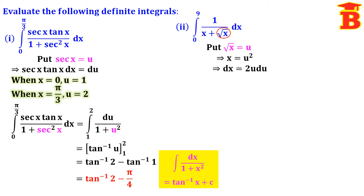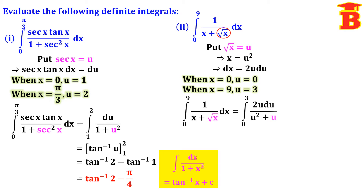We have to change the limit also. The given limit is from 0 to 9. If you put x equal to 0, root of 0 is 0, so u equals 0. If you put x equal to 9, root of 9 is 3, so u equals 3. In the denominator, x becomes u squared and root x becomes u, and for dx we write 2u du.